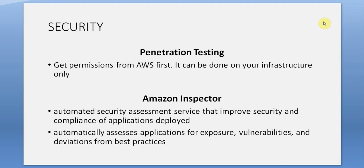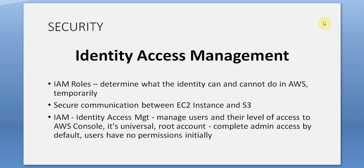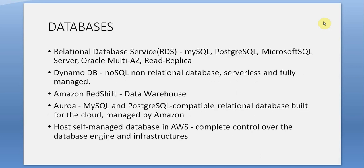Identity and Access Management (IAM): roles determine what an identity can and cannot do in AWS. Access is temporary — secure communication between EC2 instances and S3. IAM manages users and their level of access to the AWS console. It is universal. The root account has complete admin access by default. Users have no permissions by default.